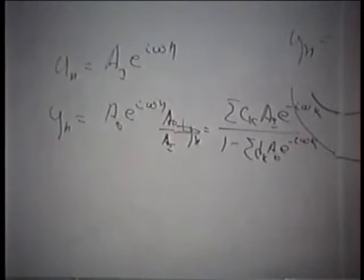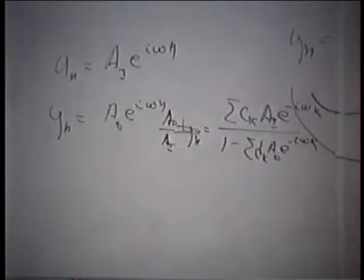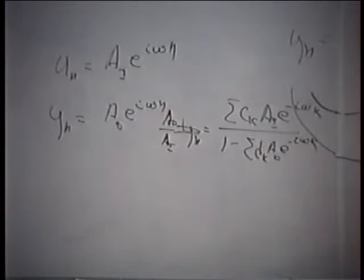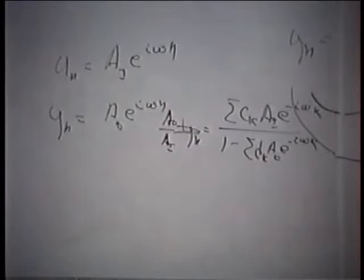Butterworth is a fairly standard one. Chebyshev-1 tries to keep equal ripples in the stop band. Chebyshev-2 puts it in the pass band. And elliptic filters — which get the name because they use elliptic functions — keep the ripples equal in both. Those are particular techniques of getting particular answers.